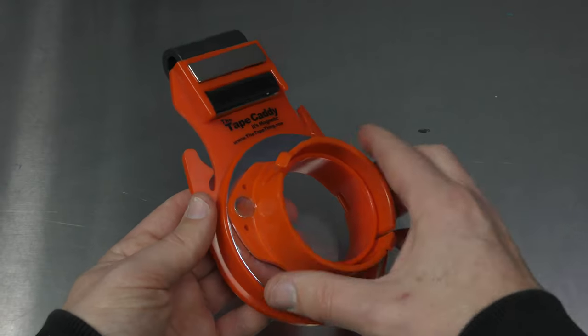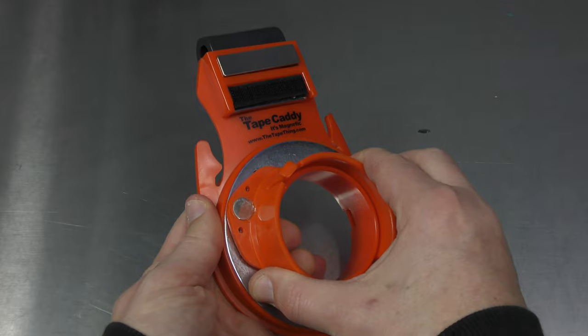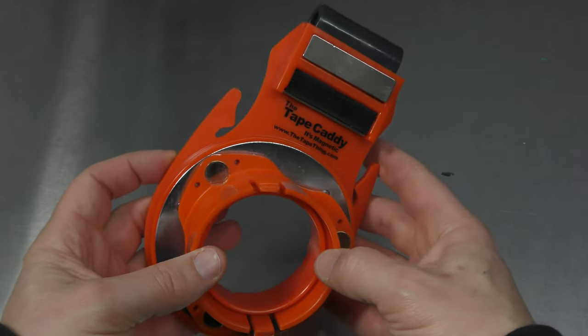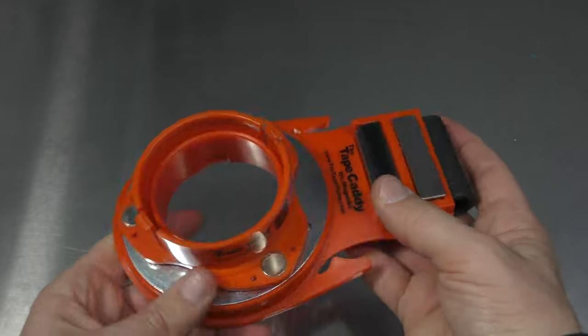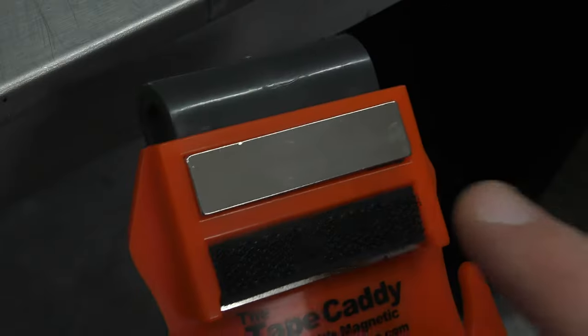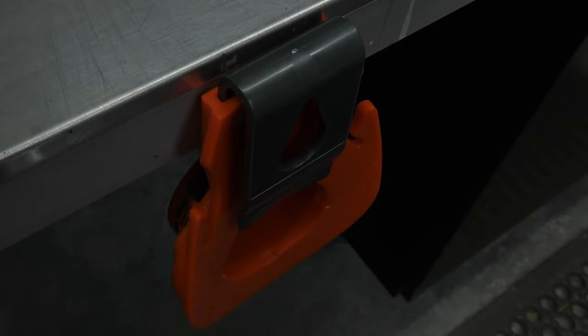With something like the tape caddy, and I'd like to say thanks to Spray Gunner for sending this out to me, you've got a dedicated holder or tape caddy which you can then clip onto your work gear so that you don't drop it or hang it on something and you can see it's also got this magnet which is nice and strong and can be easily clipped onto your bench.